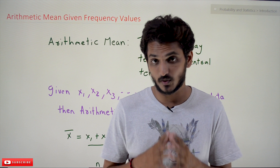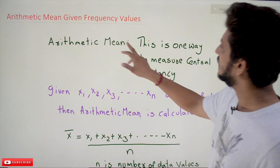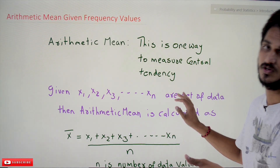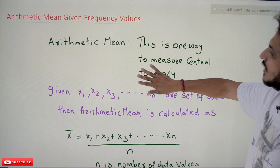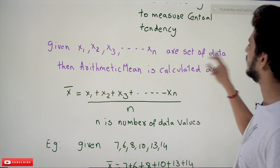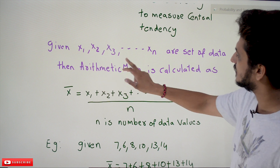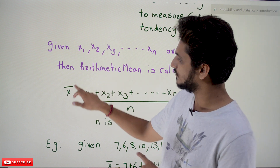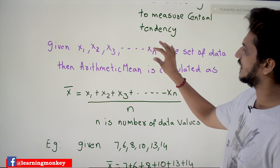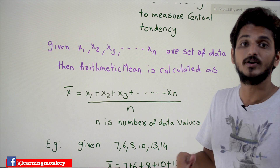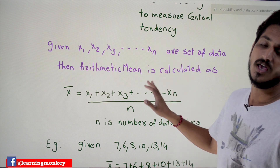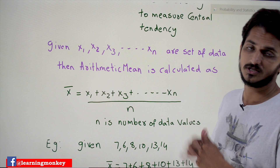Coming to today's class: arithmetic mean. This is one way to measure central tendency. Given data points x1, x2, x3, ... xn, the arithmetic mean is calculated as x̄ = (x1 + x2 + x3 + ... + xn) / n, where n is the number of data points. This is how we calculate the measure of central tendency using arithmetic mean.